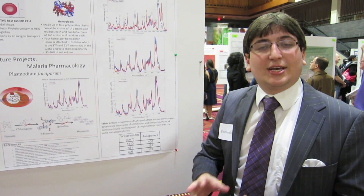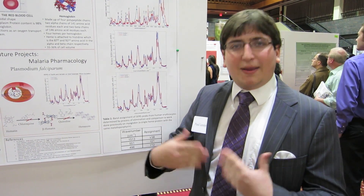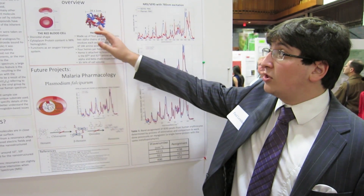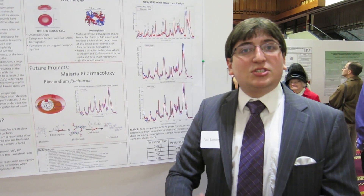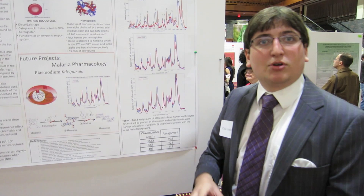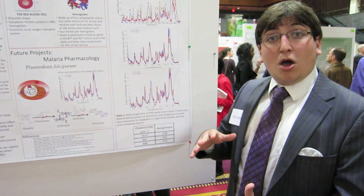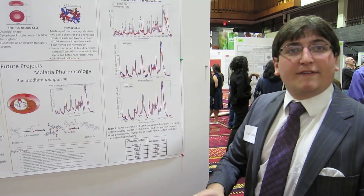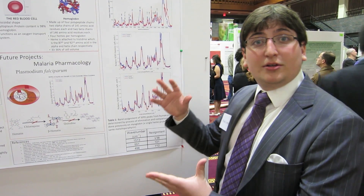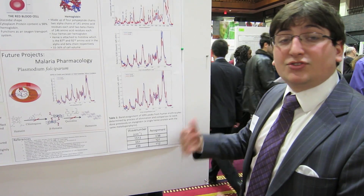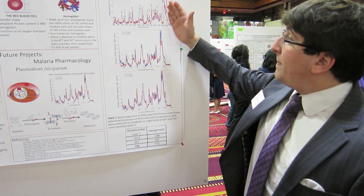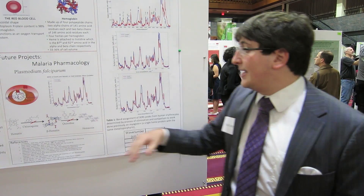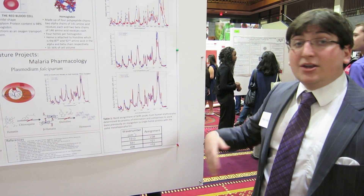At first we were just looking at the erythrocyte itself, but we determined by process of elimination that the entire spectrum was actually dominated by hemoglobin — and even more than that, the heme subgroup or ligand of that hemoglobin protein. Because of that, we were looking to identify certain bands which were only available from the SERS spectrum, and we were able to identify these bands by saying it's not part of the erythrocyte and it's not part of the protein.